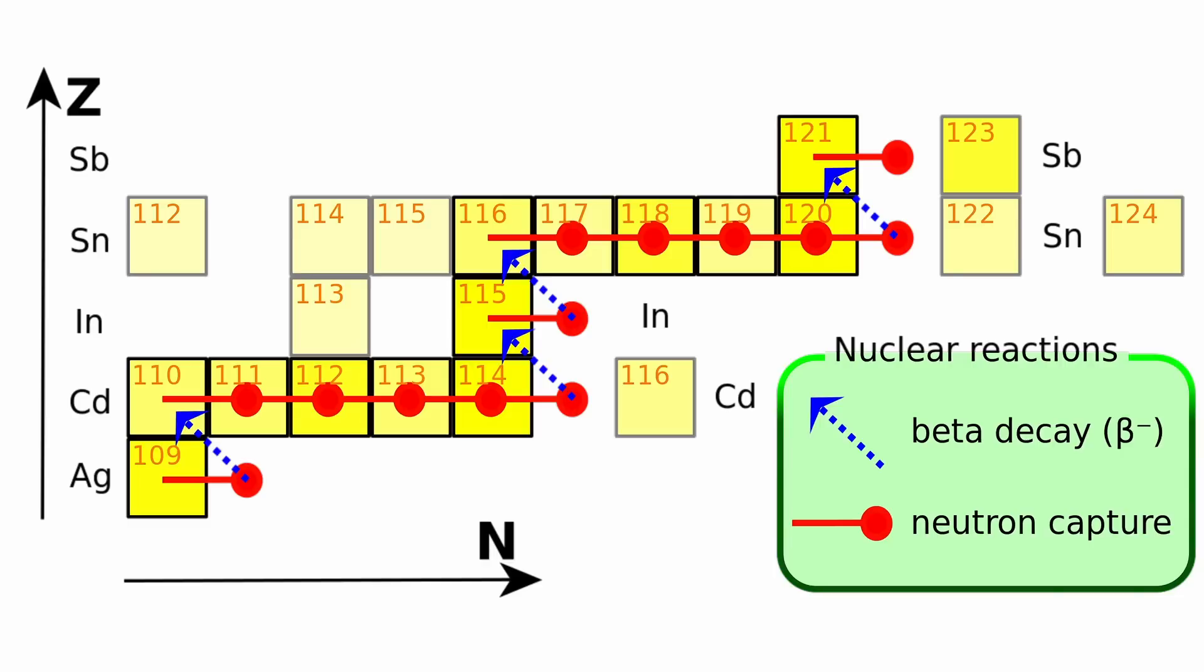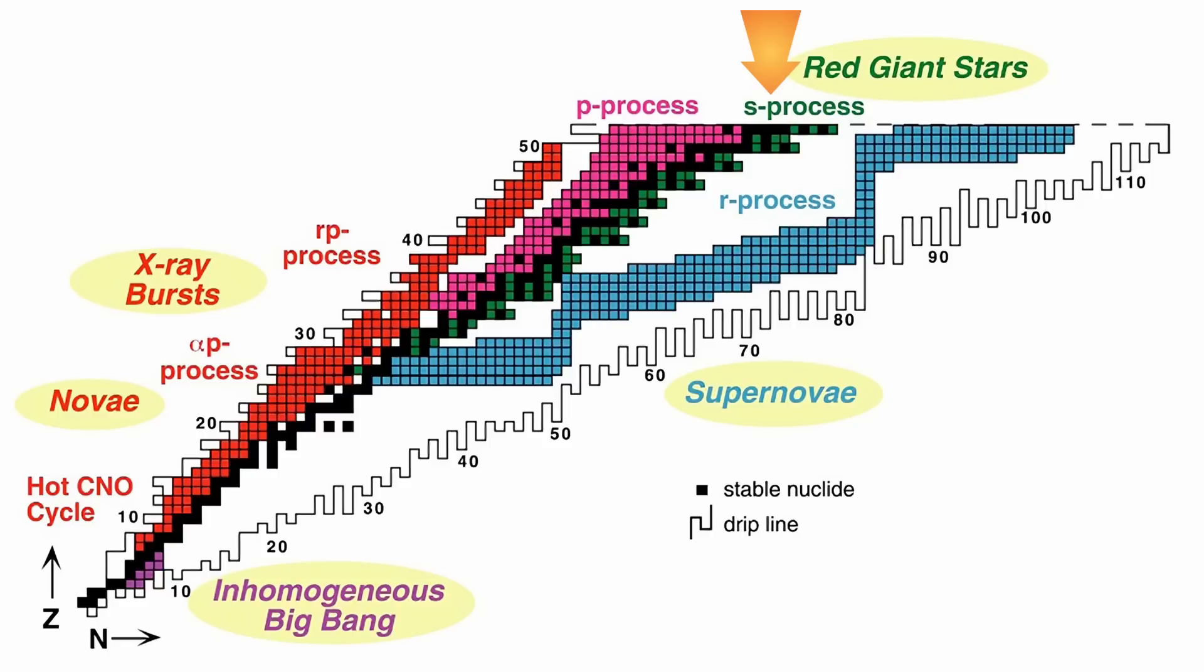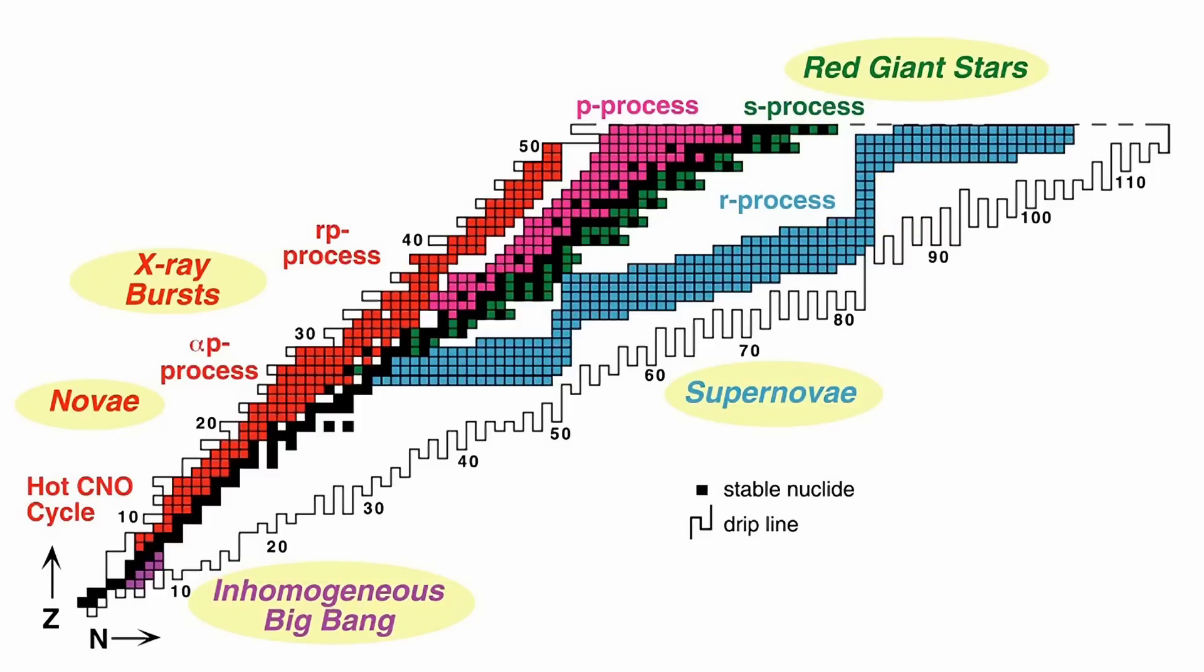Beyond these, the synthesis of heavier elements occurs primarily through neutron capture. The slow s-process takes place over millions of years in stars nearing the end of their lives, while the rapid r-process happens in fleeting extreme environments or neutron star mergers. These processes collectively explain how stars contribute to the formation of elements across the periodic table.